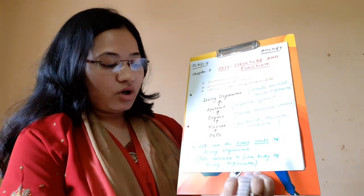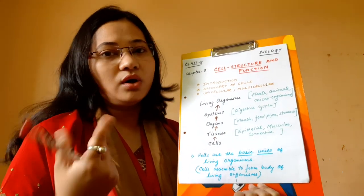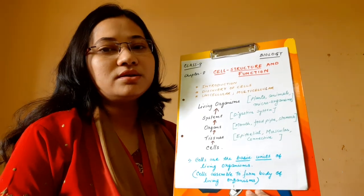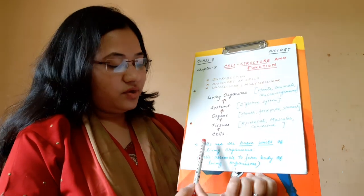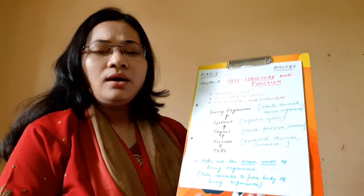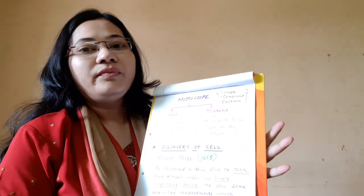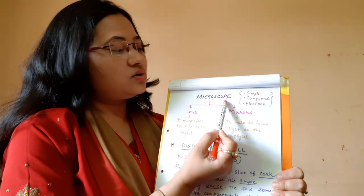Cells assemble to form the body of living organisms — whether it is a bulb of onion, a potato, an orange, an apple, or any plant or animal. All living organisms are made up of units called cells. These cells are very small and microscopic; we cannot see them with the naked eye, so we need special devices.